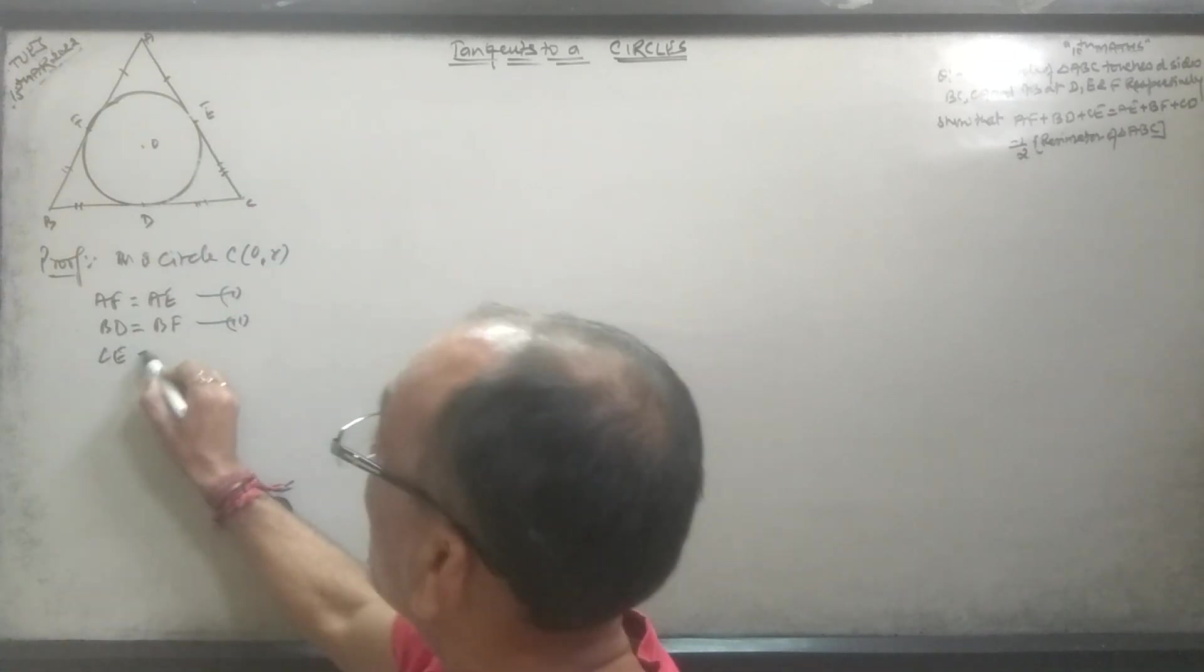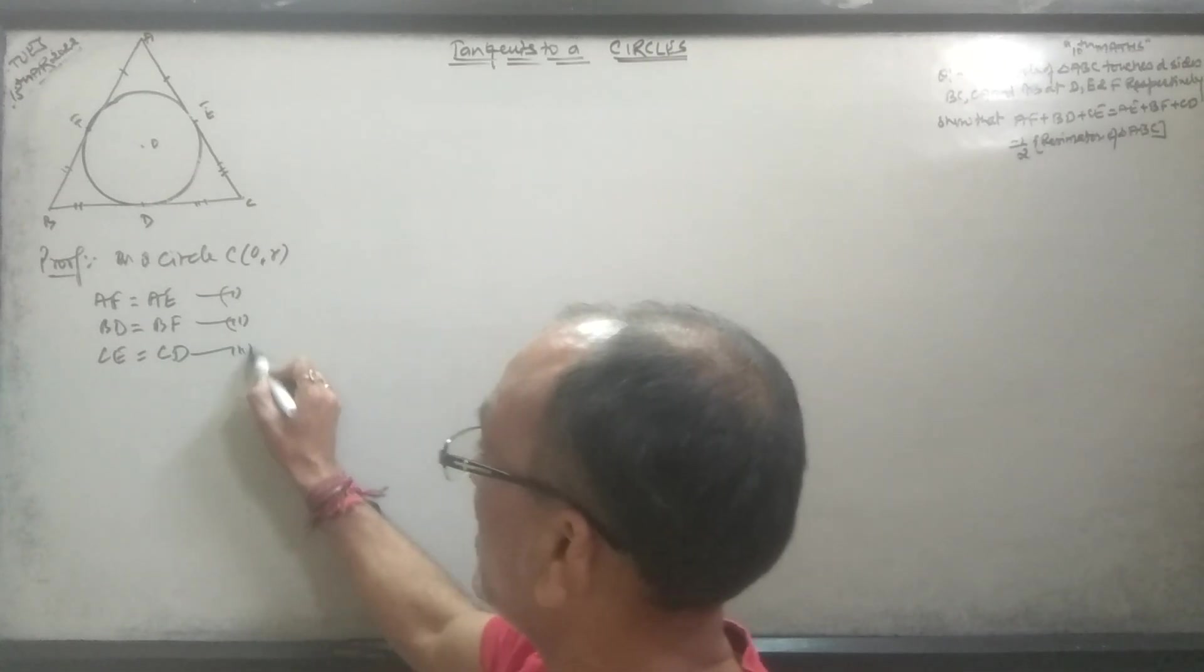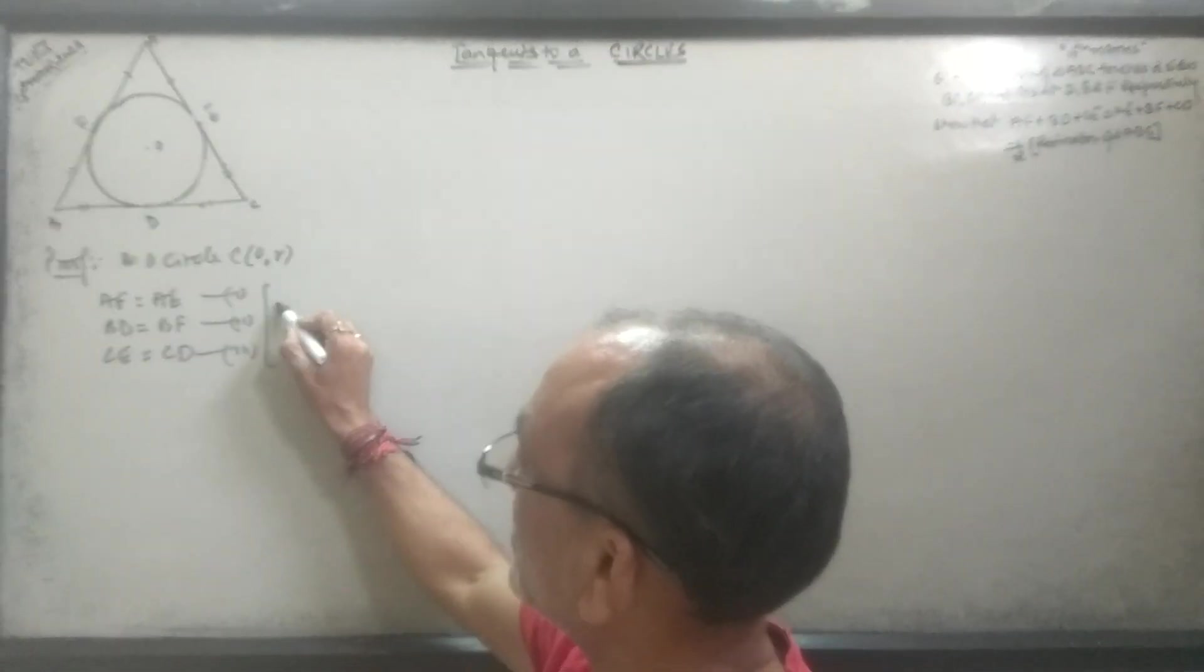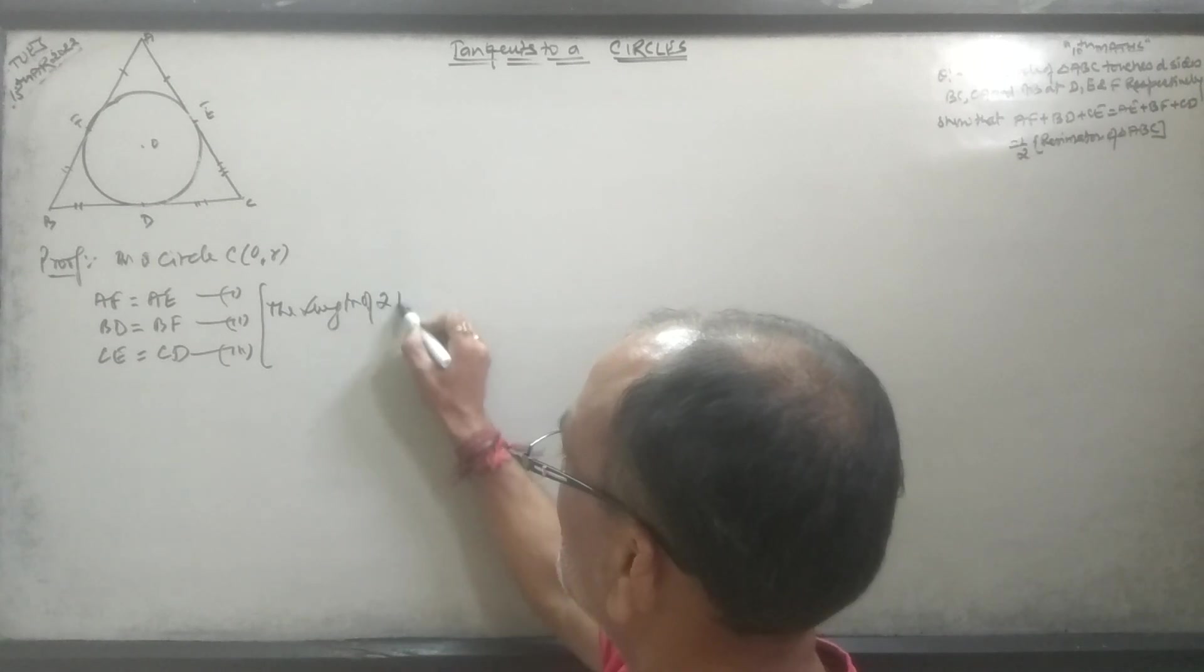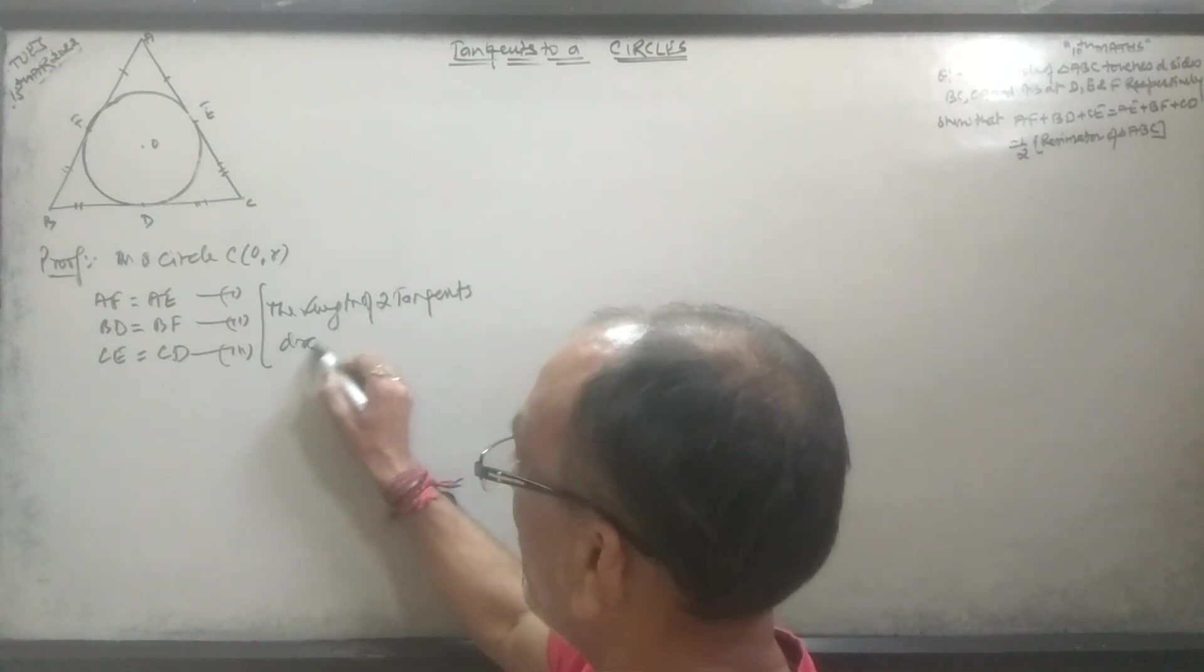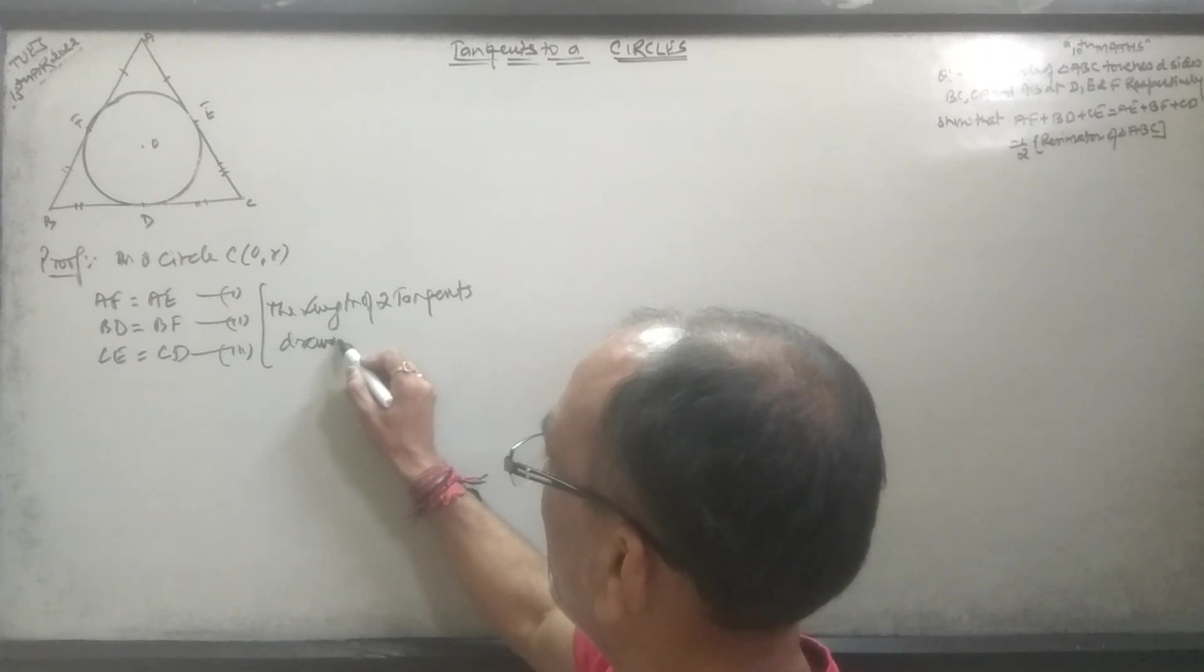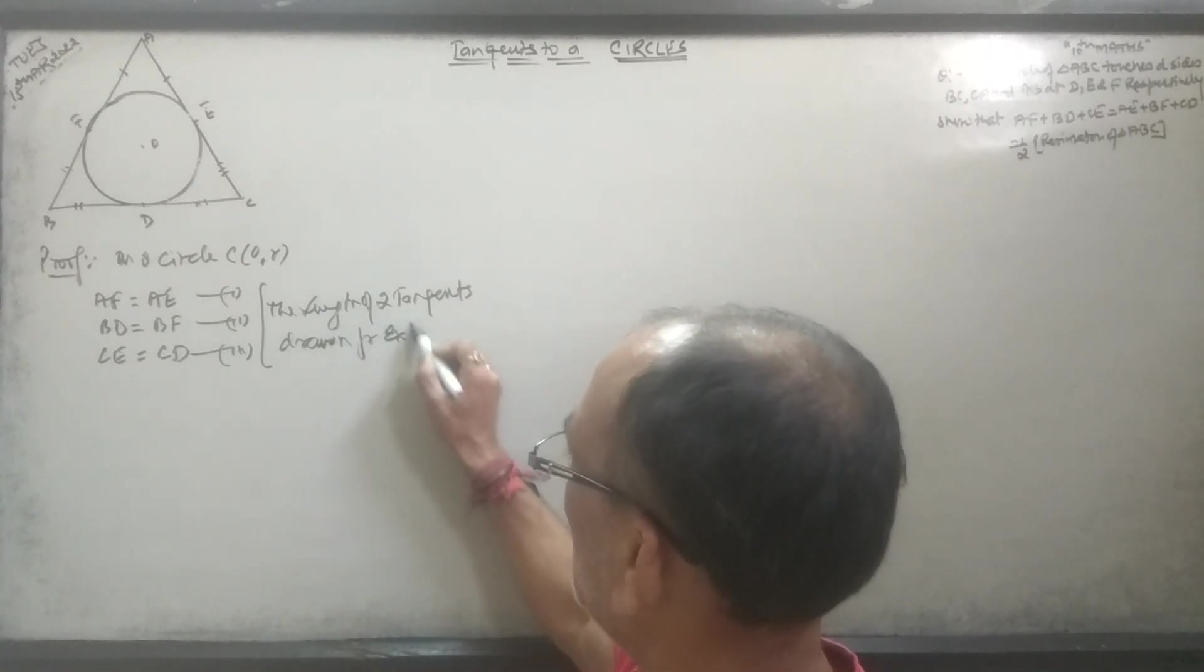CE is equal to CD, and BF is equal to BD. The length of two tangents from a point to a circle are equal.